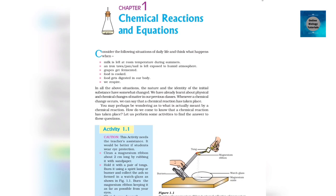In all the above situations, the nature and the identity of the initial substance have somewhat changed. We have already learned about physical and chemical changes of matter in our previous classes. Whenever a chemical change occurs, we can say that a chemical reaction has taken place. How do we come to know that a chemical reaction has taken place? Let us perform some activities to find the answer to these questions.